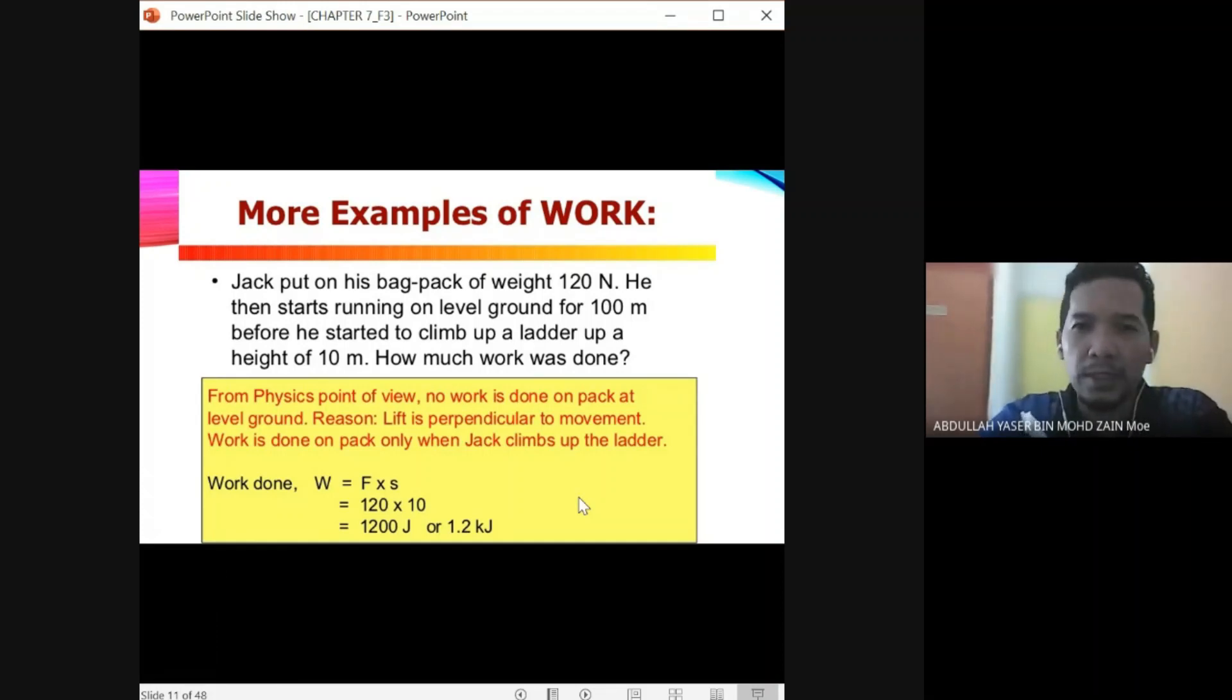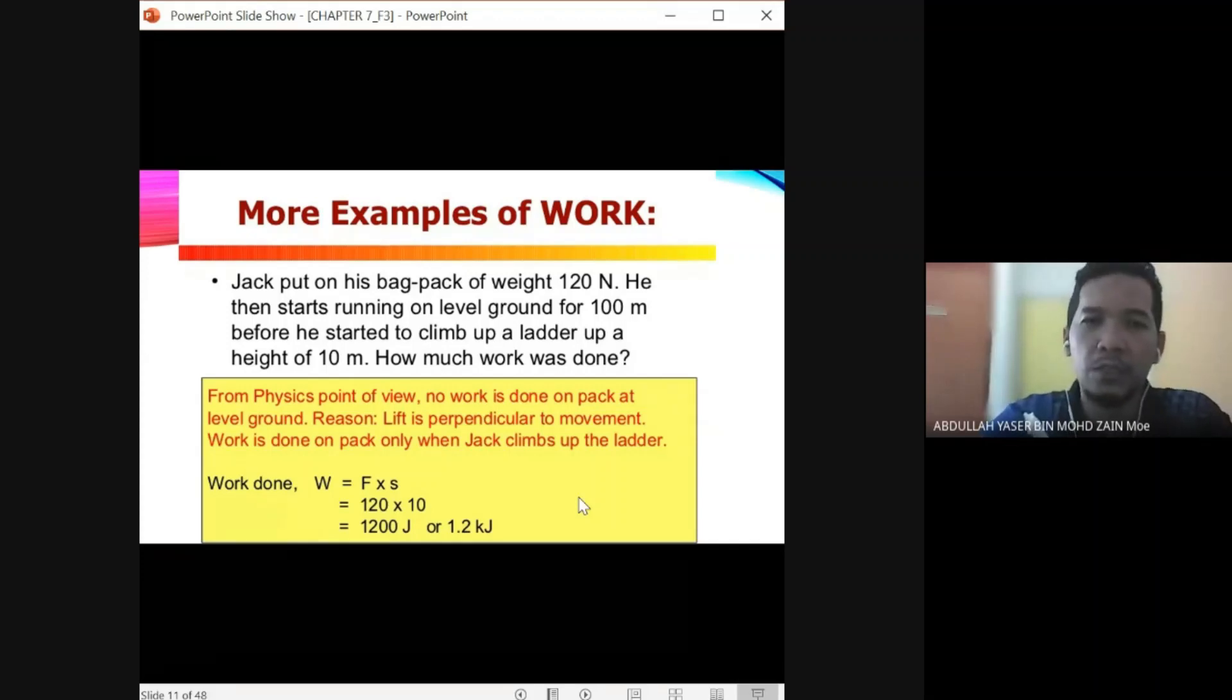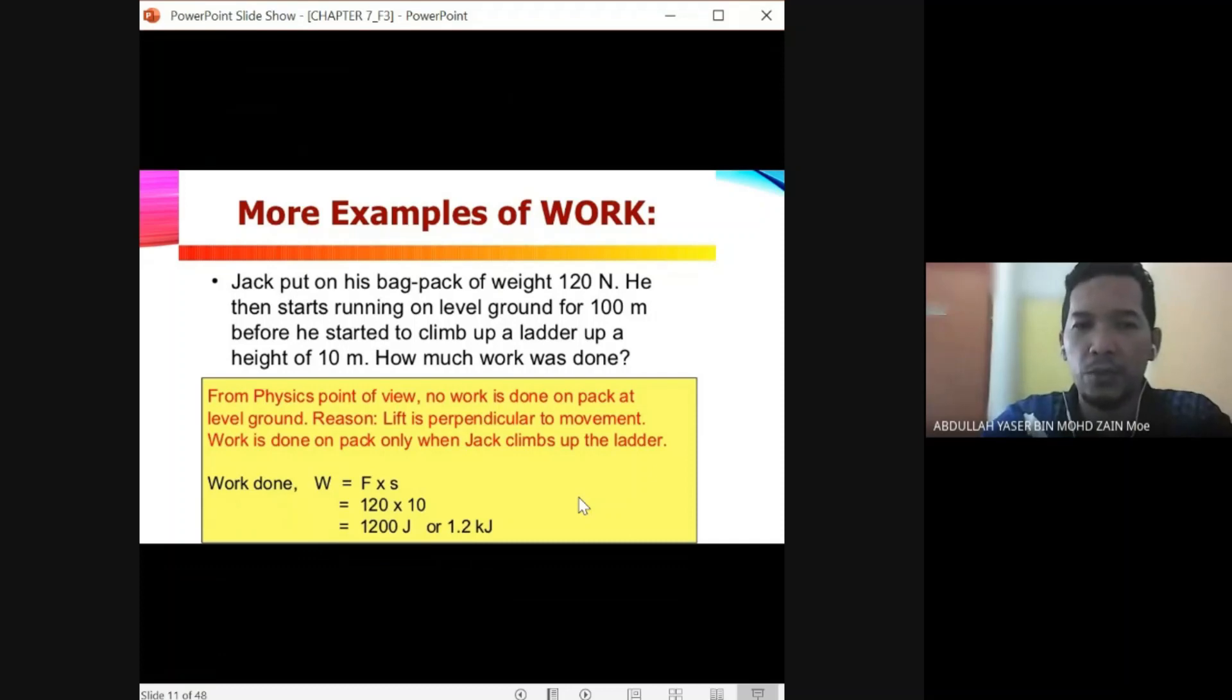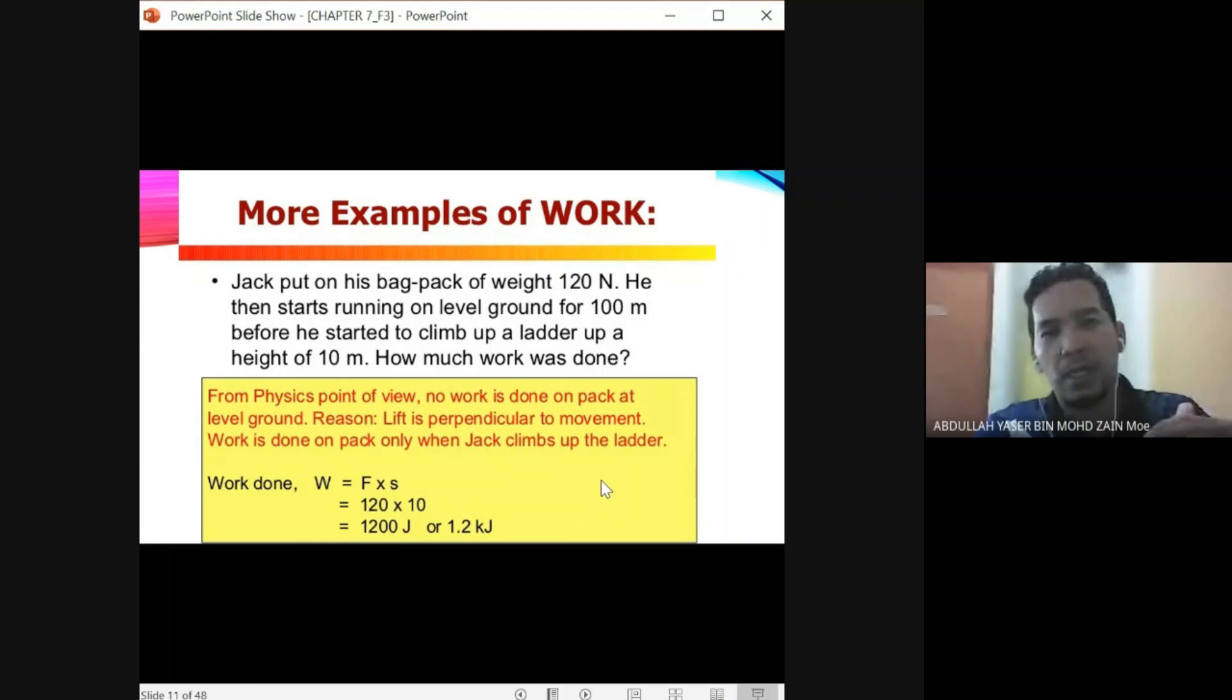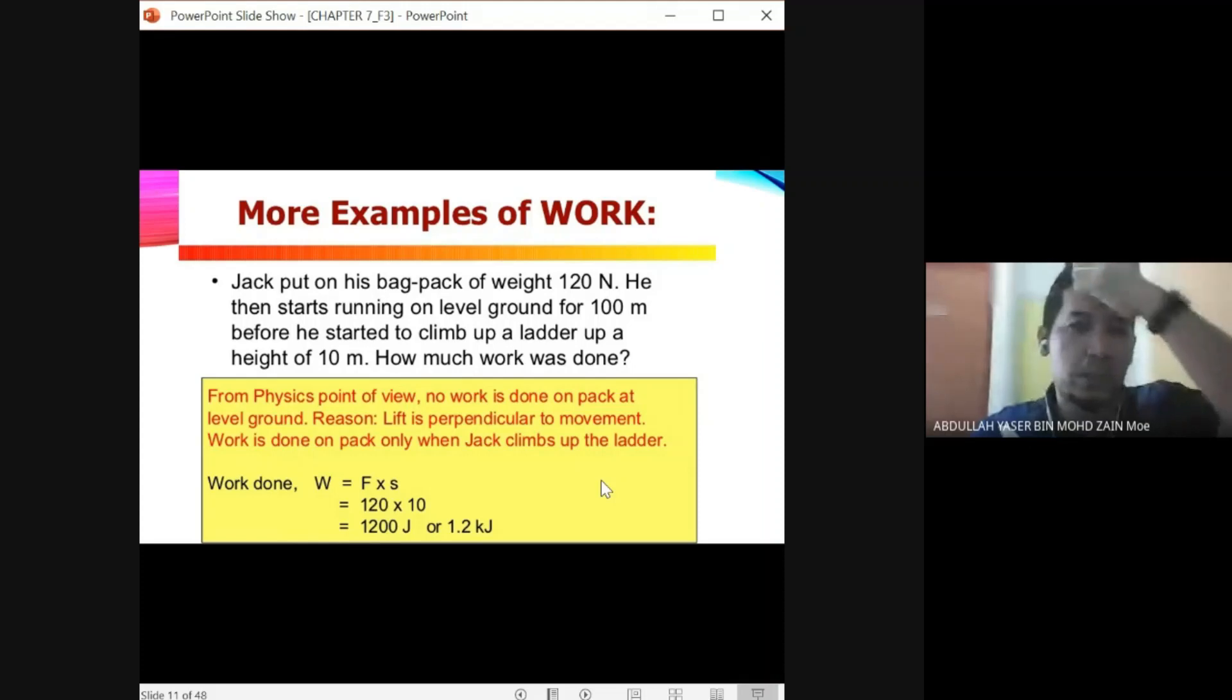As I mentioned earlier, there is no work done on the pack at level ground. When Jack is running 100 meters, there is no work done because the lifting of the backpack is considered as going up - the direction of force is going up. The lift is perpendicular to movement.